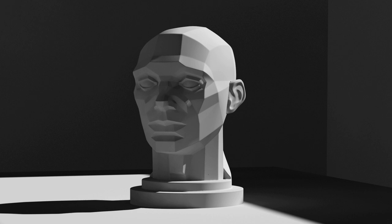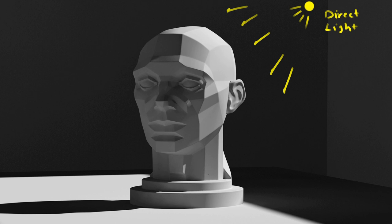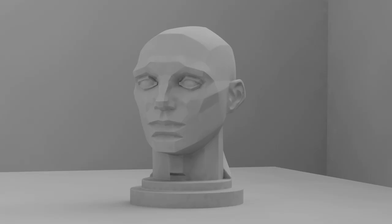With the direct light, all surfaces that are close and pointing at the light source will be the lightest, and all the ones turning away will be in the shadows. Direct light will also have a hot zone where most of the first bounces hit directly, while the rest are either hit by secondary bounces or missed entirely, turning them into shadows.